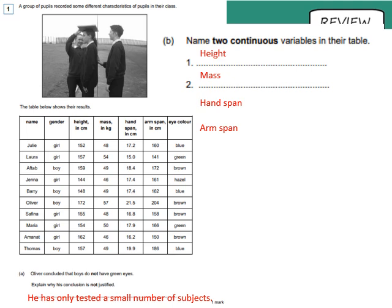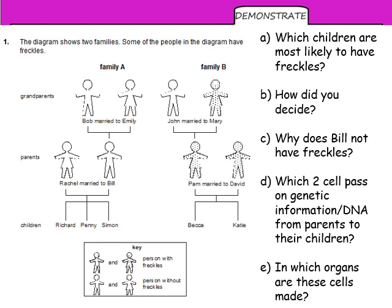Here's a tougher question about inherited variation. This diagram shows two families, Family A and Family B. Some people have freckles — shown by dots on the figure using the key at the bottom. Mary, Pam, and David have freckles. John, Bob, Emily, Rachel, and Bill do not. The children — Richard, Penny, Simon, Becca, and Katie — we don't know if they have freckles or not. Please pause and answer the questions.